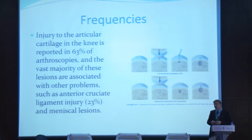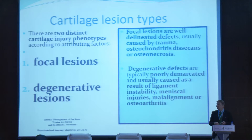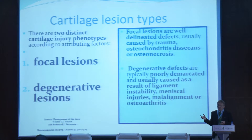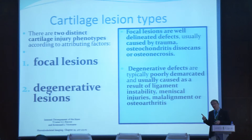Injury to articular cartilage in the knee is reported in 63% of arthroscopies. The majority are associated with other injuries such as ligament injuries, ACL injuries, and meniscal lesions — not so often as a single entity. Looking at the type of lesion, you could have a focal lesion or a degenerative lesion. Focal lesions are characterized by a well-demarcated defect caused by trauma, osteochondritis dissecans, or osteonecrosis, while degenerative defects are more poorly demarcated and caused by ligament insufficiencies, meniscal injuries, malalignment, and arthritis. It is extremely important to remember that degeneration is not the same as osteoarthritis.